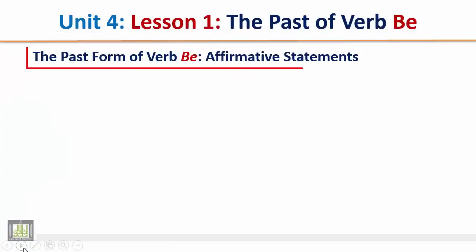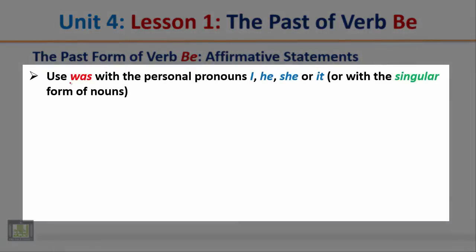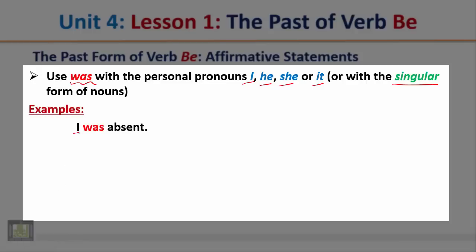The past form of verb be — affirmative statements. Use 'was' with the personal pronouns I, he, she, it, or with the singular form of nouns. Example: 'I was absent.' Notice that after the subject pronoun I, we use the verb 'was.'